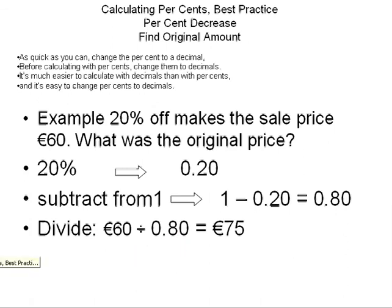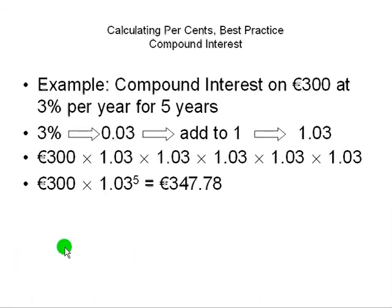Now, go on to this final kind of question that comes up with percent, and it is compound interest. Suppose you put 300 euros in the bank at 3% interest per year for five years. How much would this money be worth after five years? Again, we change 3% to a decimal, we add 1 and we get 1.03.